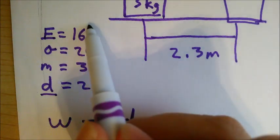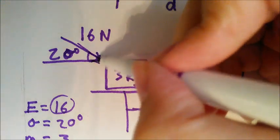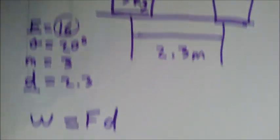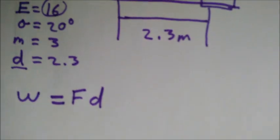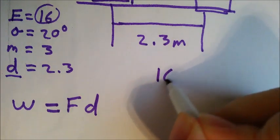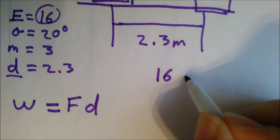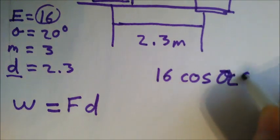And we have the force and the distance. But this force doesn't work because it's at this angle, at 20 degrees angle. So, how do we find the force? Easy! The force, so we just need to divide it by 16 times cosine of the angle, which is 20.